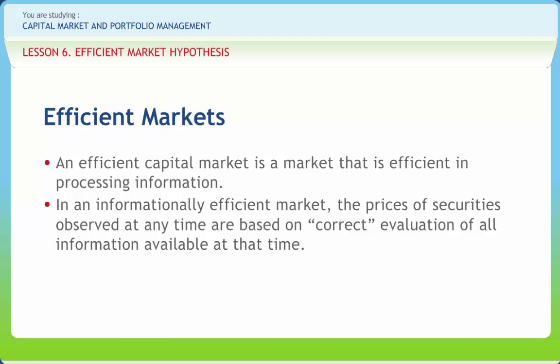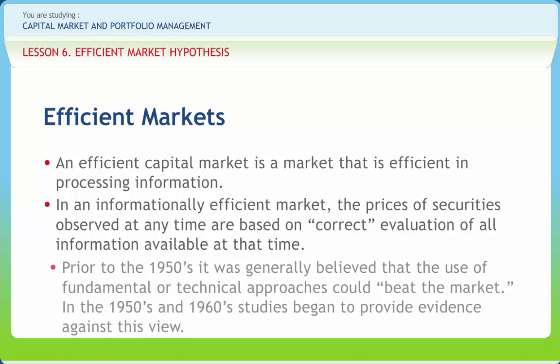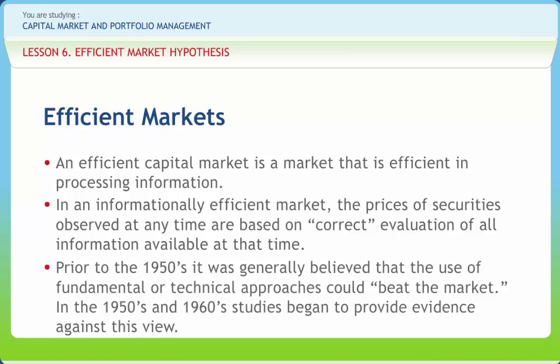In an efficient market, prices immediately and fully reflect available information. Prior to the 1950s, it was generally believed that the use of fundamental or technical approaches could beat the market. In the 1950s and 1960s, studies began to provide evidence against this view. Researchers found that stock price changes followed a random walk, and that stock prices reacted to new information almost instantly, not gradually, as had been believed.